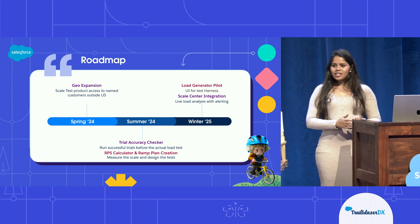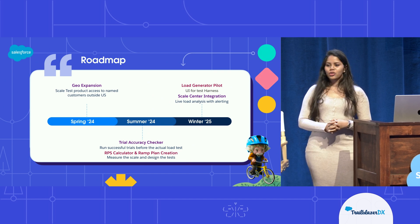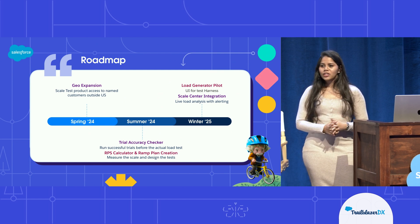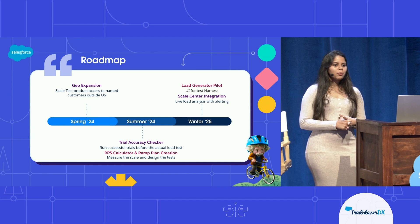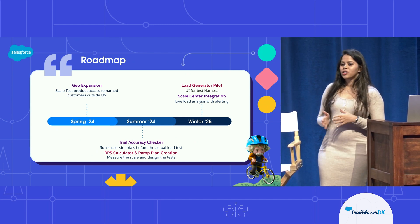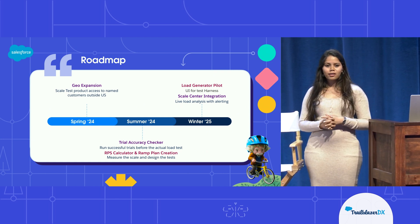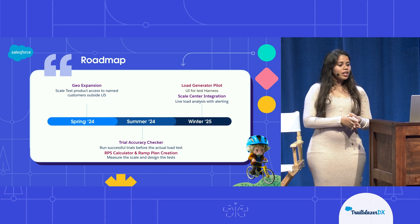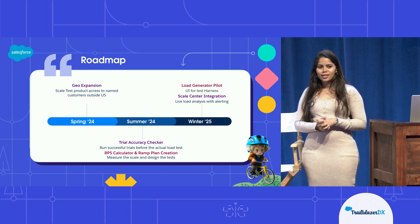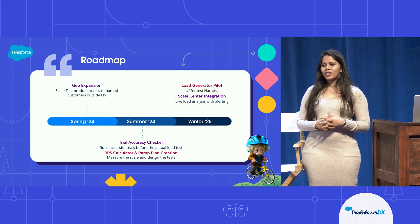What's on the horizon? We went GA in December for US customers and are now expanding across other geographical regions for strategic customers. In summer, we have a feature called Trial Accuracy Checker, which will help you run sanity tests — quick 10 or 20 user tests — to realize how accurate your simulation is compared to your production peak traffic. We're also coming up with a Requests Per Second calculator to standardize how we measure scale at Salesforce and help you calculate what your scale is today. In Winter 25, we're aiming for our load generator pilot, creating a UI for test harness so you can run entire load tests directly in the product without virtual machines, plus closer integration with Scale Center for live load analysis with alerting for key events during scale testing.